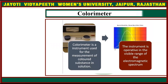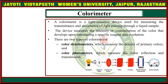A colorimeter is an instrument used for the measurement of colored substances in solution, and the instrument operates in the visible range of the electromagnetic spectrum. It is a light-sensitive device used for measuring the transmittance and absorbance of light passing through a liquid sample.